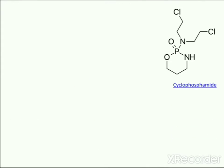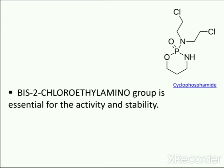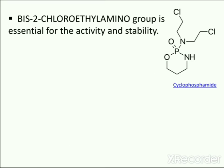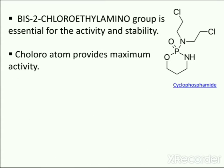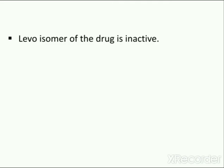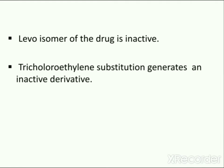The bischloroethylamino group is essential for the activity and stability of nitrogen mustards. The chloro atom ensures maximum activity, while trichloroethylene substitution generates an inactive derivative.